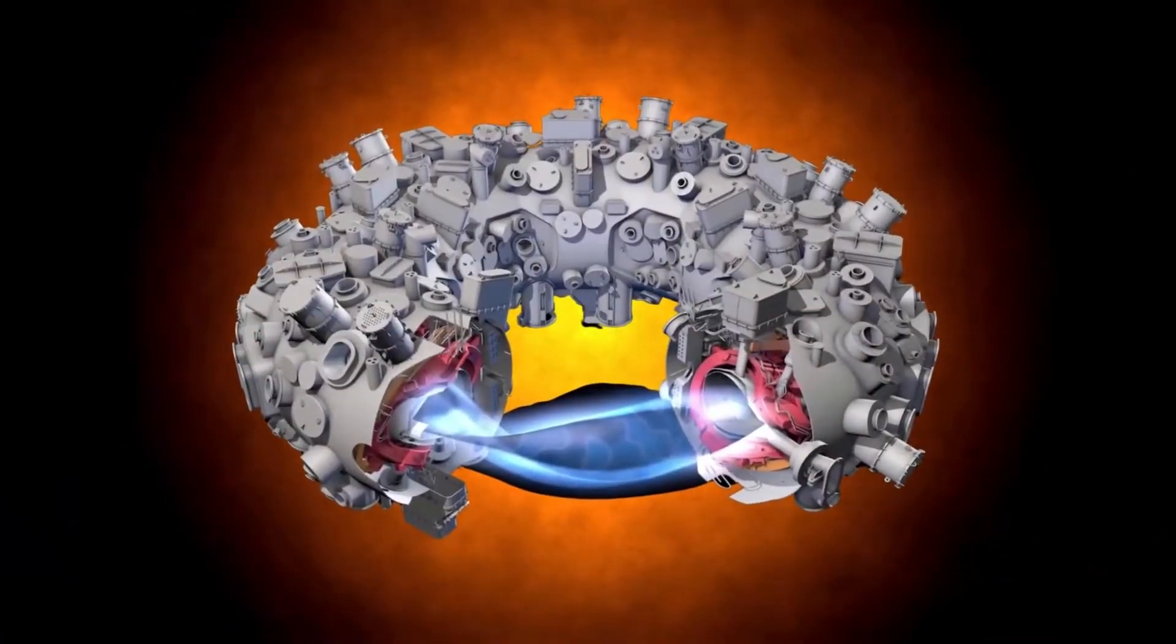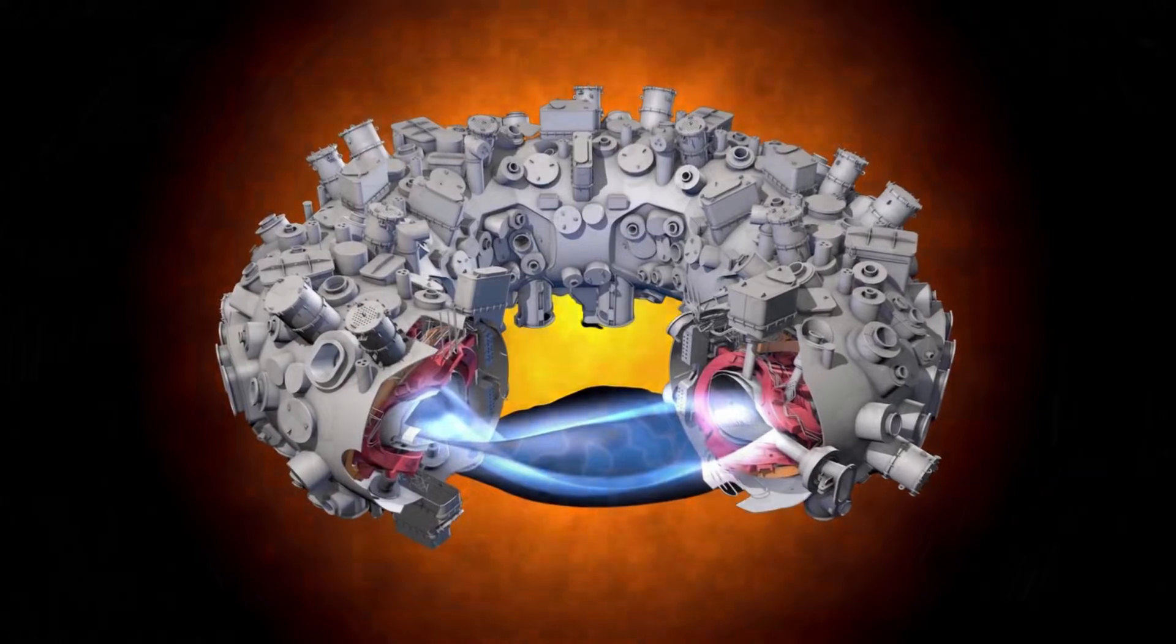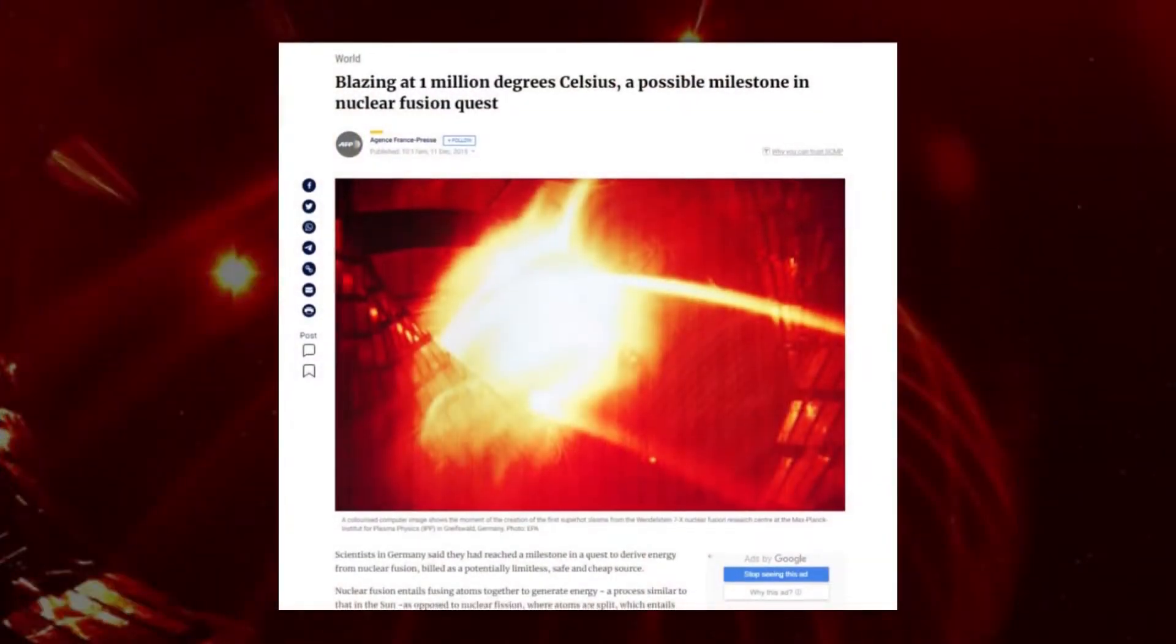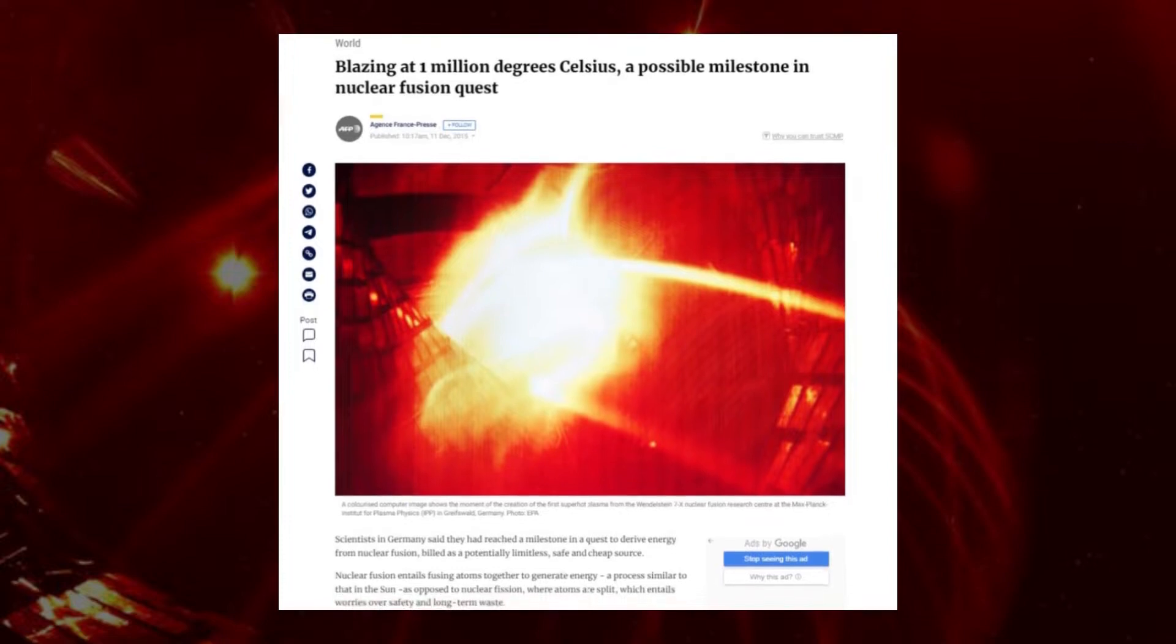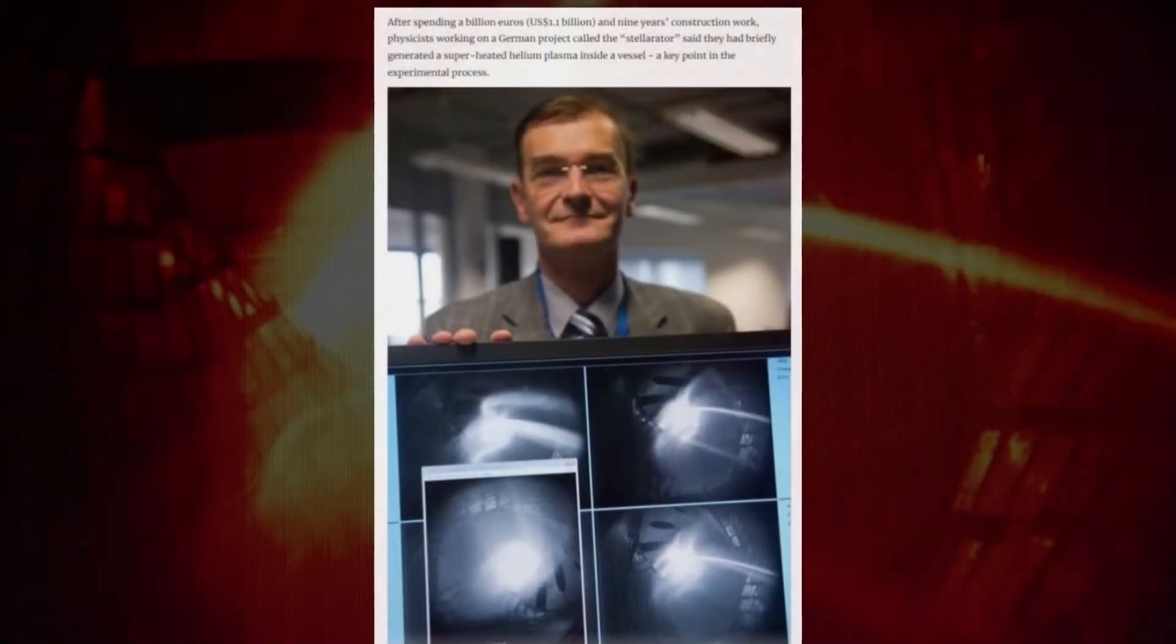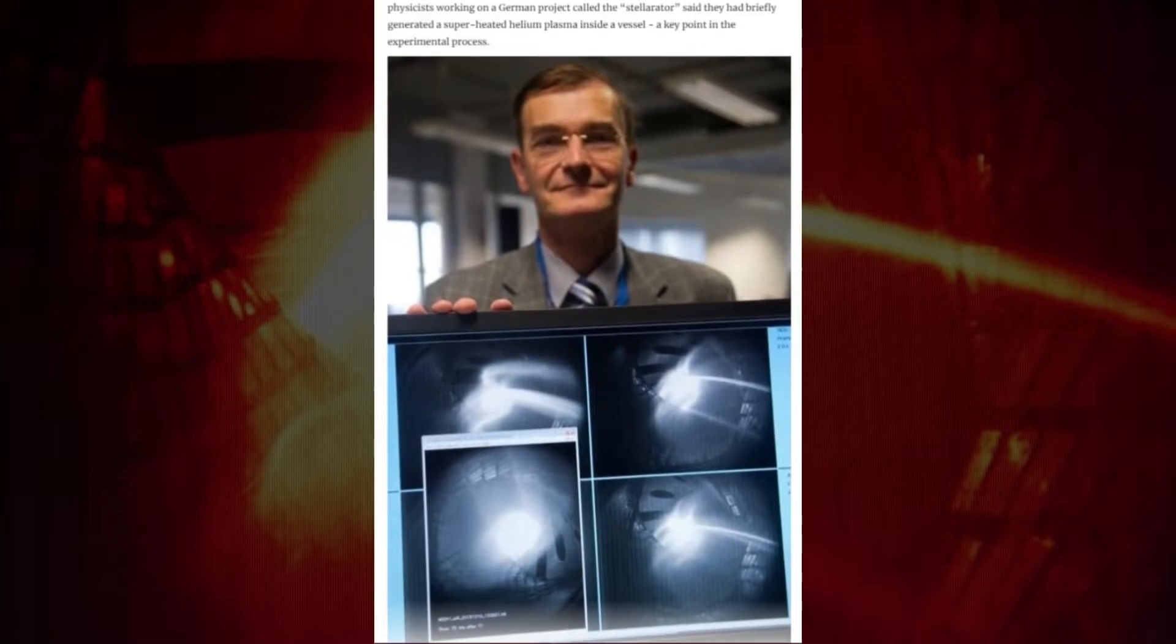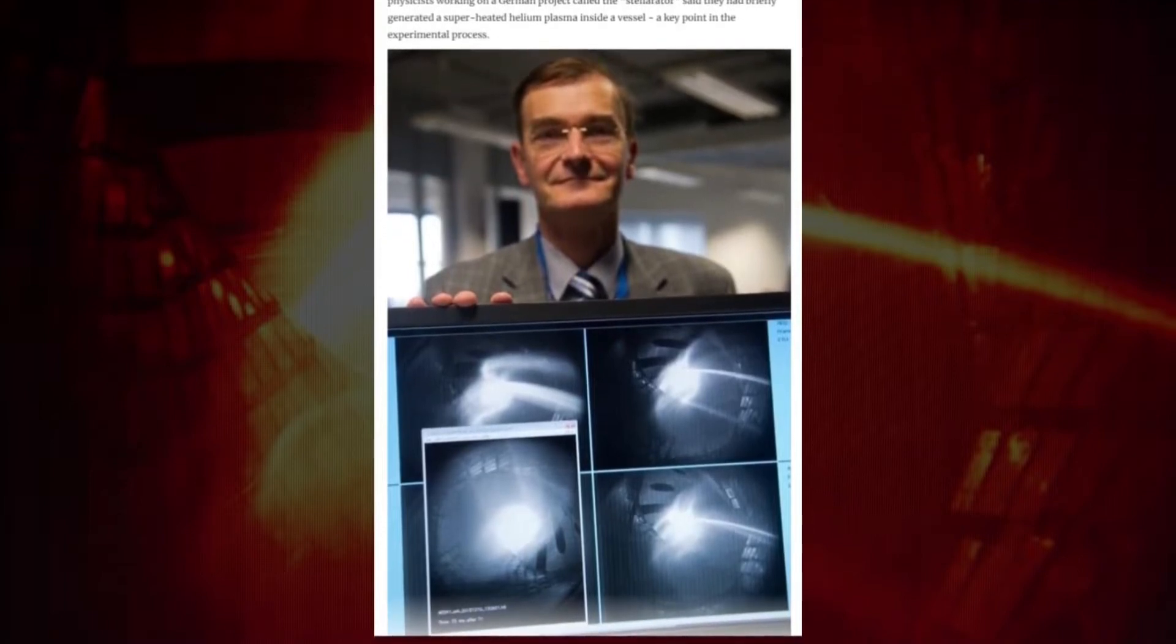The center of the Stellarator, which is in the shape of a doughnut, functions in essence as a little star. Late in 2015, the apparatus premiered at the Max Planck Institute for Plasma Physics, where it was shown that it could maintain a loop of helium ions at a temperature of one million degrees for one-tenth of a second.